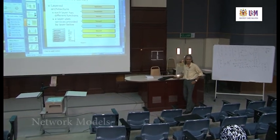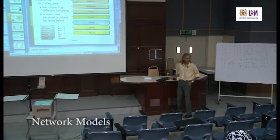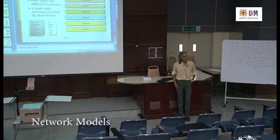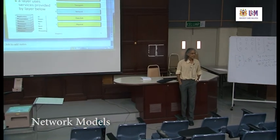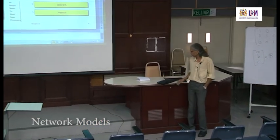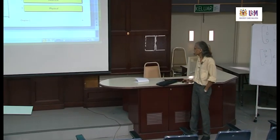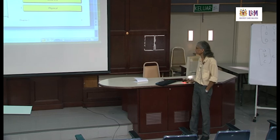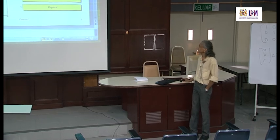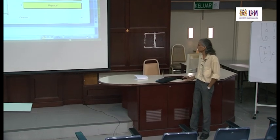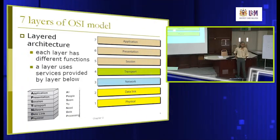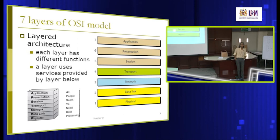So we were talking about network models the other day. We discussed the OSI model, which has seven layers, and each layer will have a specific task.